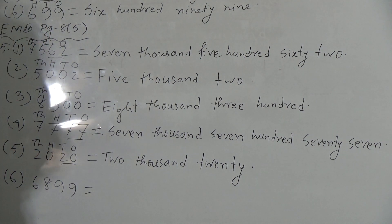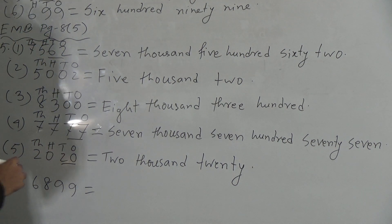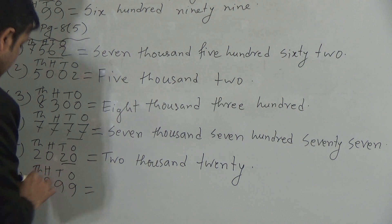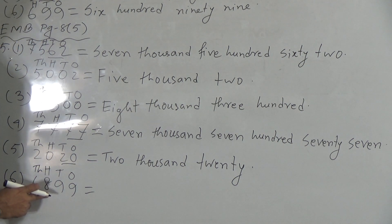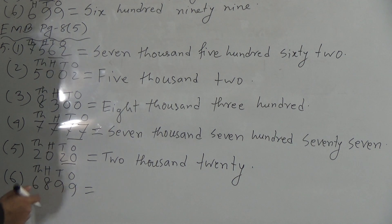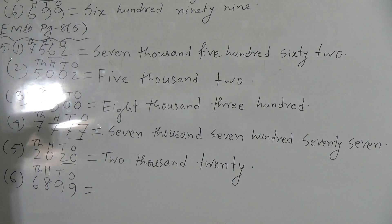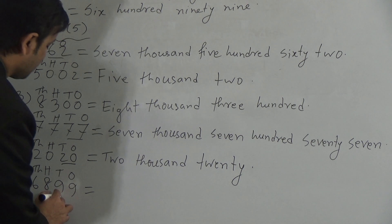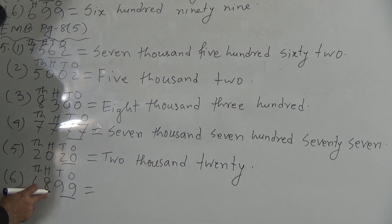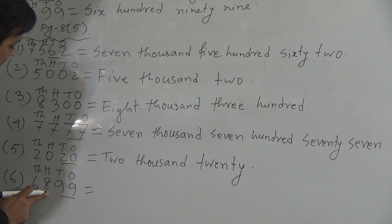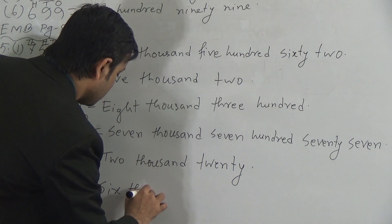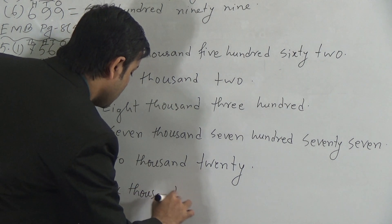Today's last number, which is number 6: 1's, 10's, 100's, 1000's. So 6 is in the 1000's position, 8 is in the 100's position, 9 is in the 10's position, and 9 is in the 1's position again. So this will be 6,899. Write here: 6,899.